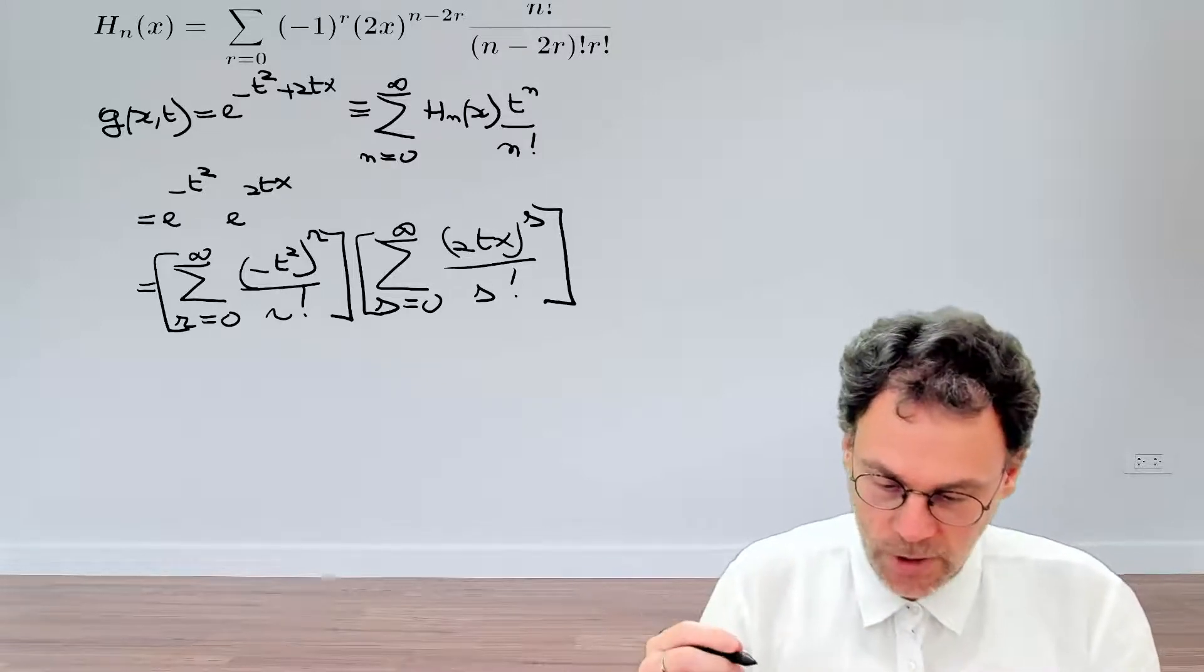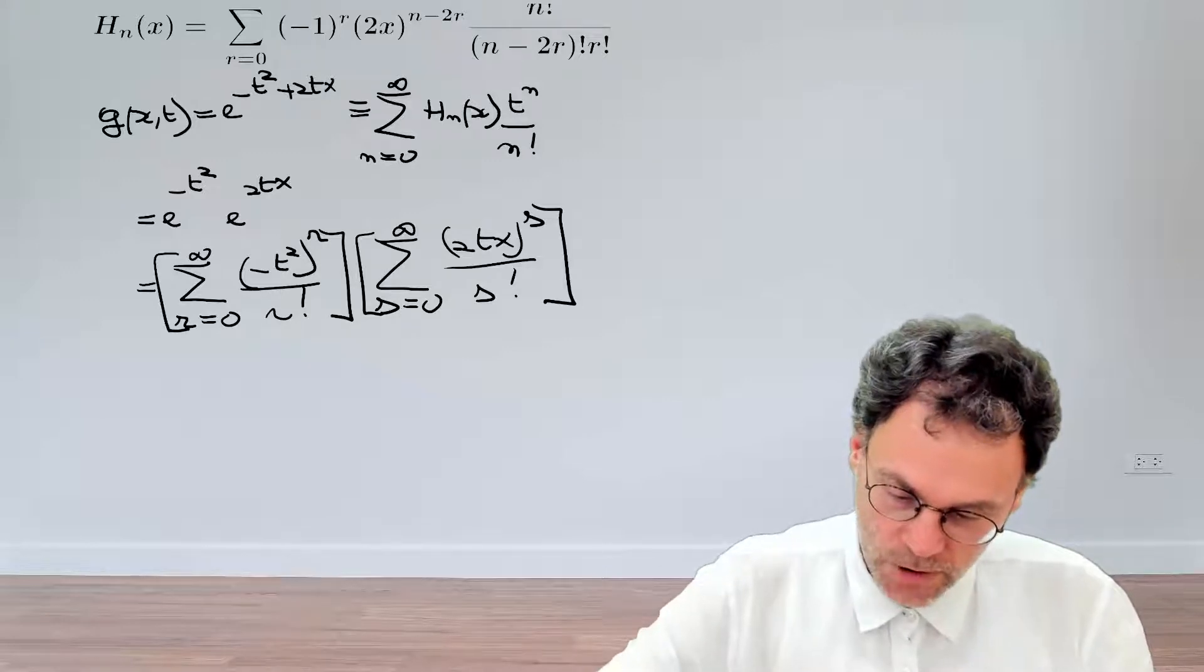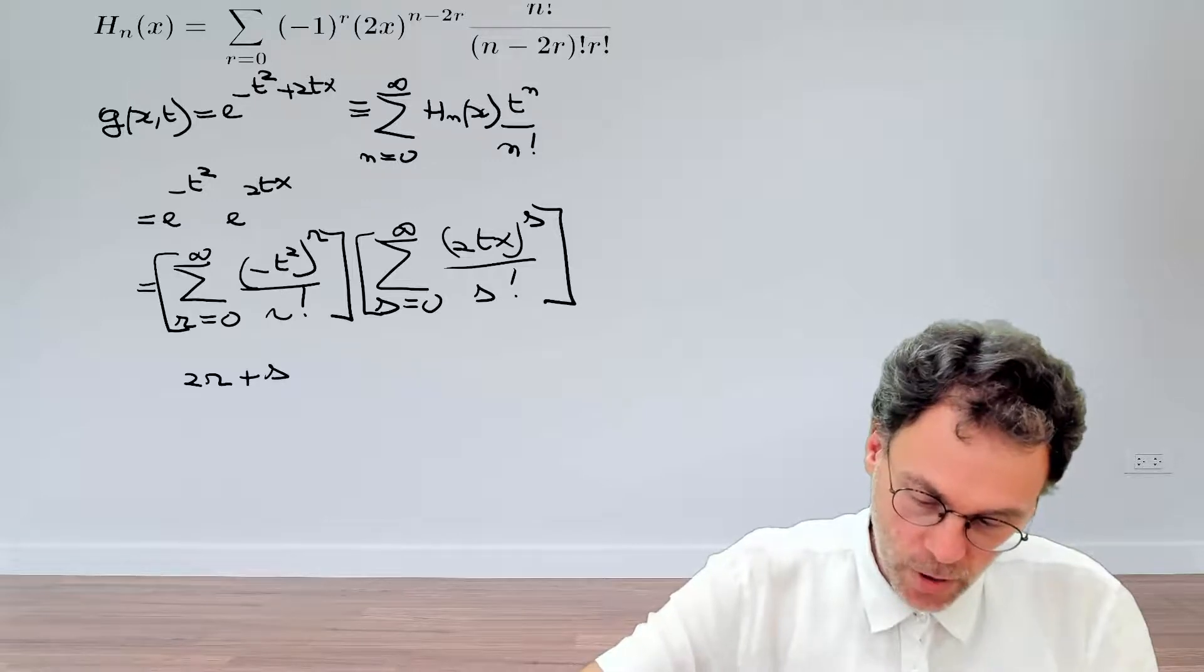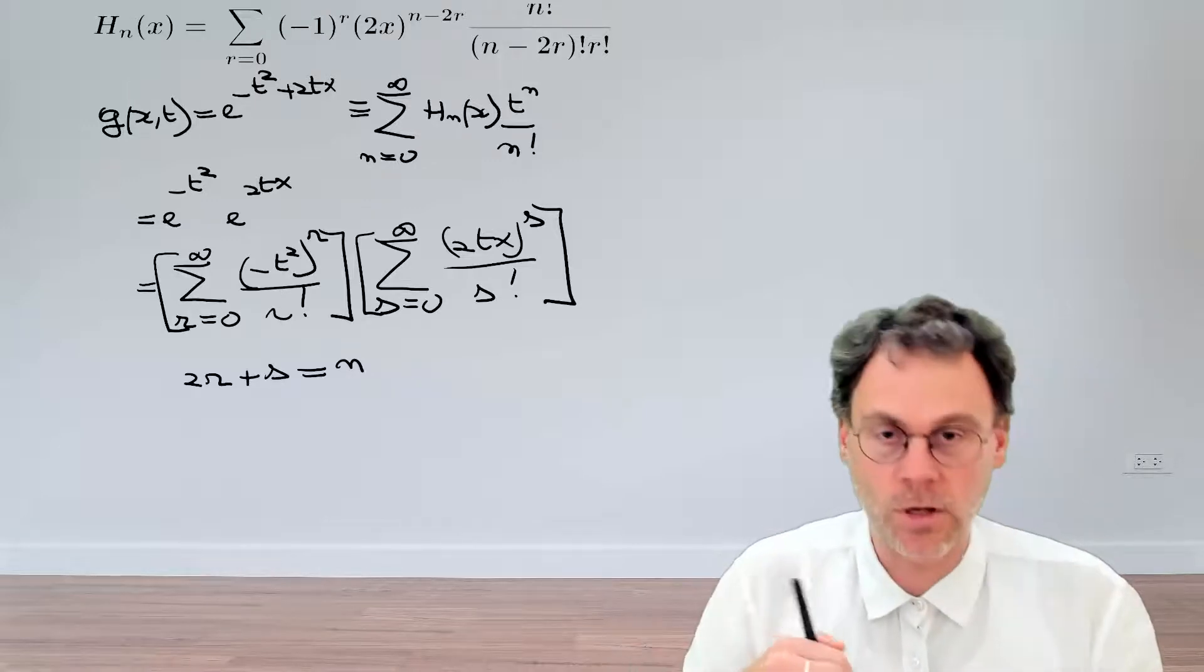So what powers of t do we have here? We first have t to the power of 2r and then we multiply that by t to the power of s. So this together should be n.